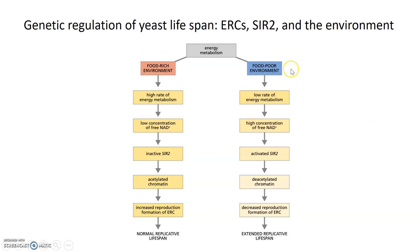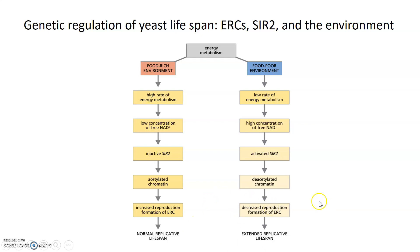In a food-poor environment with less nutrition, the rate of energy metabolism decreases, respiration decreases, and less NAD+ is converted to NADH. As a result, NAD+ concentration goes up. NAD+ can activate SIR2 expression, meaning you produce the histone deacetylase protein, which removes acetyl groups from chromatin, turns off rDNA expression, and decreases the formation of ERCs. With fewer ERCs, you can extend lifespan.